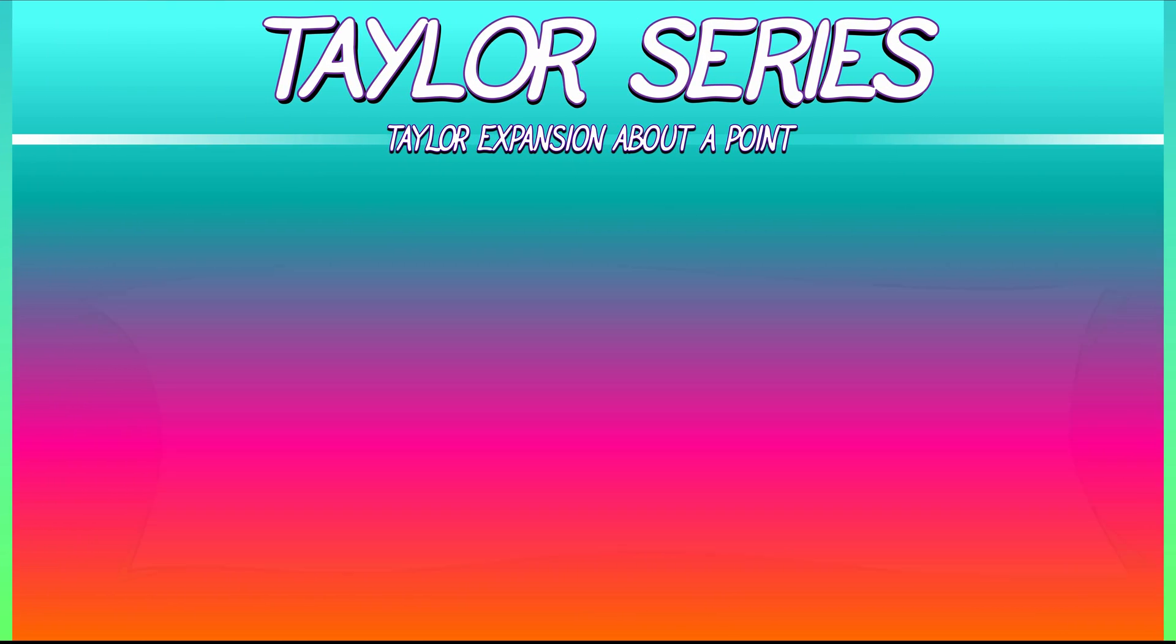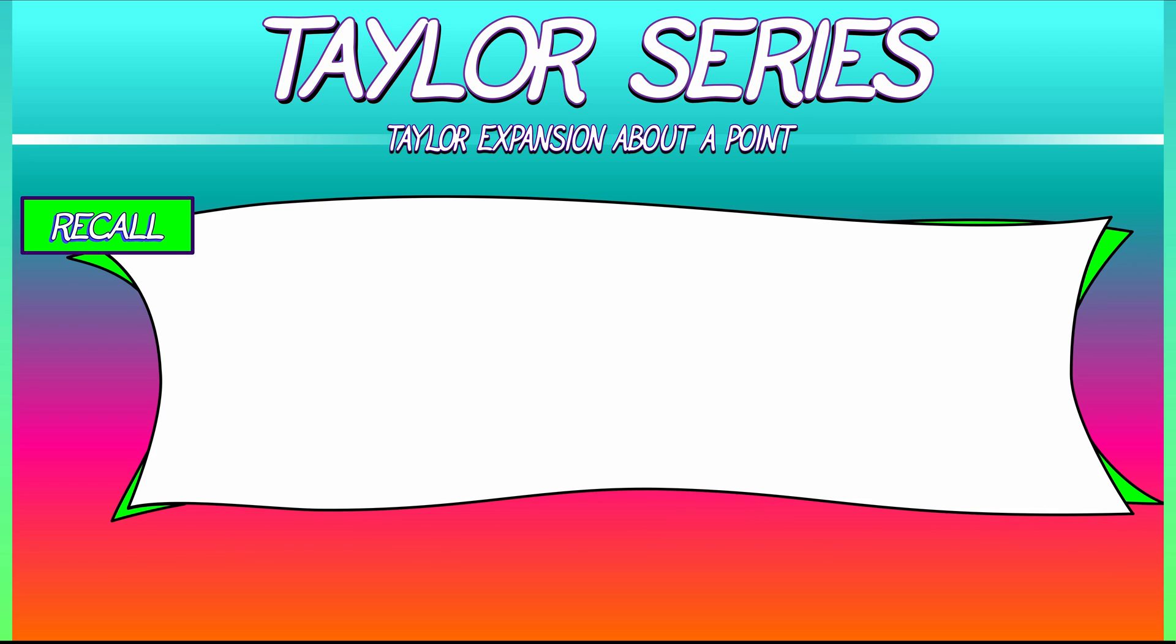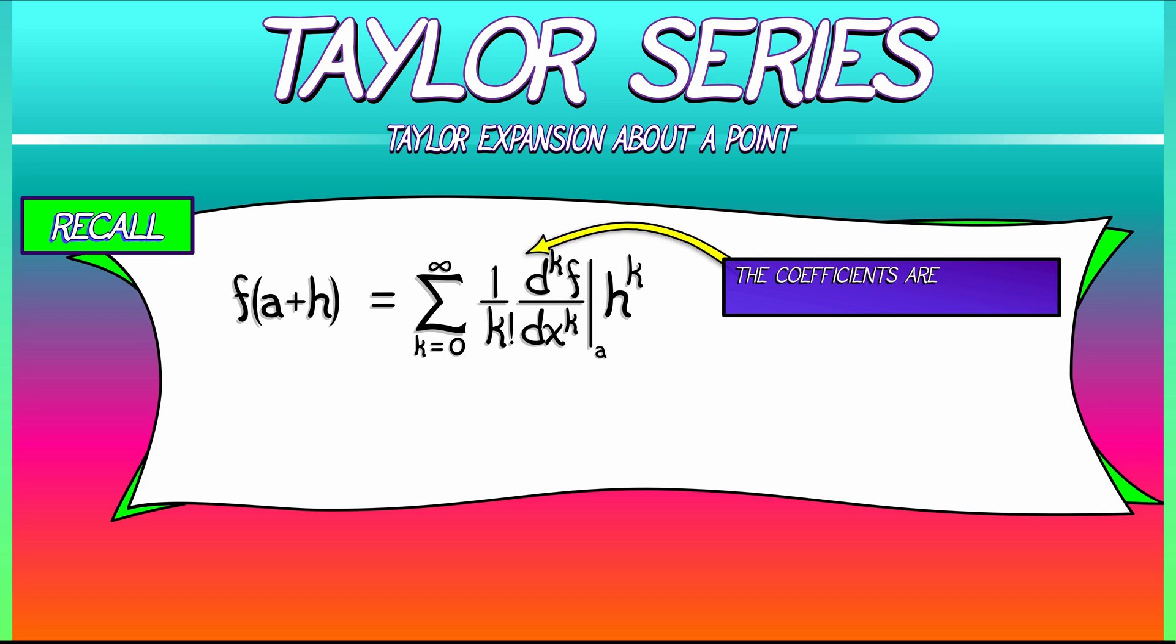Recall what that formula is. We haven't looked at it in a while. If we want to approximate f near a, moving out by some amount h, then what we get is this polynomial series where the derivatives of f at the expansion point give you the coefficients in that series.